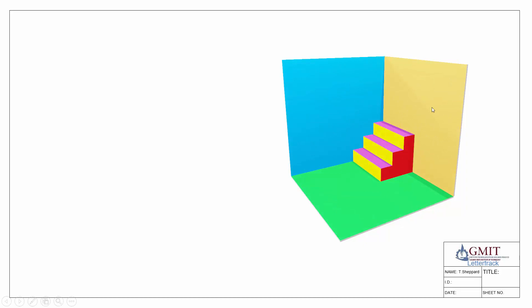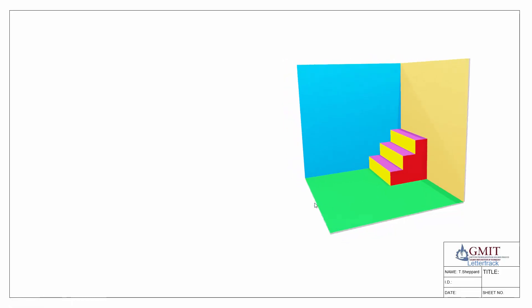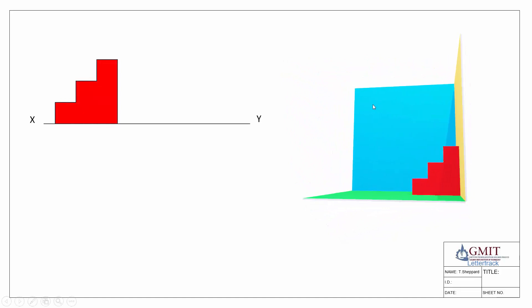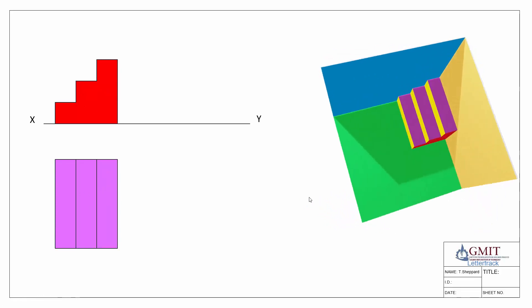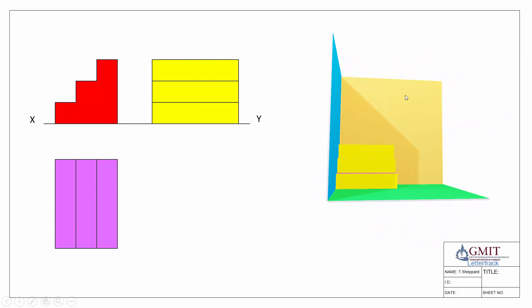Here is our 3D setup of an object — in this case a series of steps — and here we have our typical planes of reference: a vertical plane, a horizontal plane, and our end vertical plane. We use these planes to get our plan, elevation, and end view by projecting our front elevation onto our vertical plane, our plan view onto our horizontal plane, and our side view onto our end vertical plane.